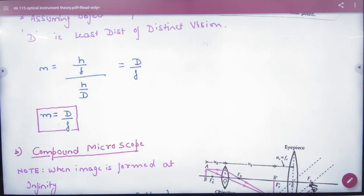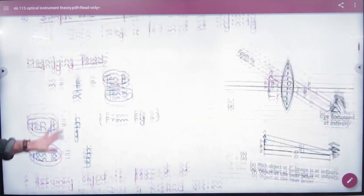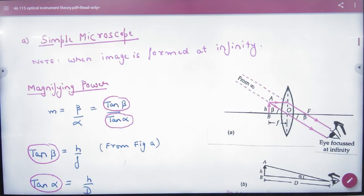Now to note, whatever the formula is finite, there is 1 plus something. And in infinite, 1 plus something is broken. This is a shortcut. In infinity case, D by F will come. So this will be a case when the image is formed at infinity.